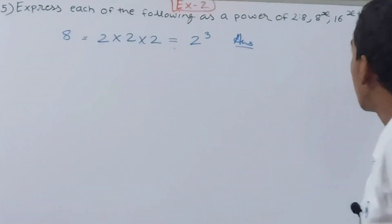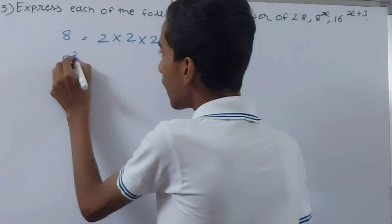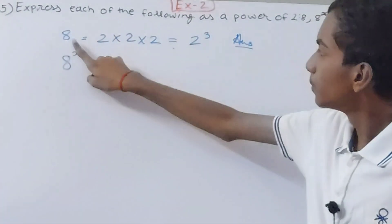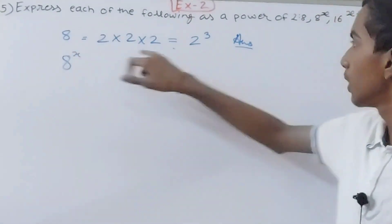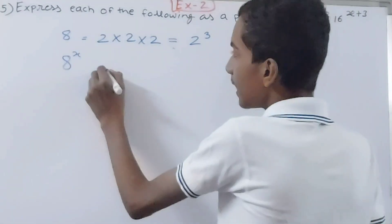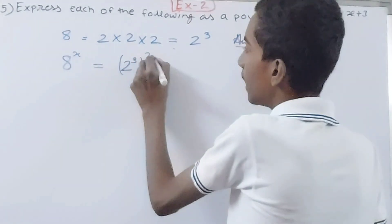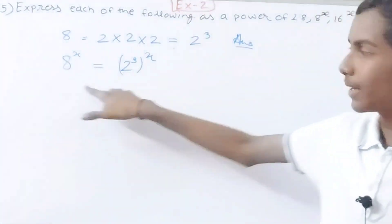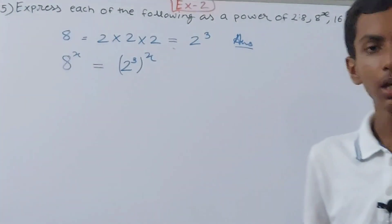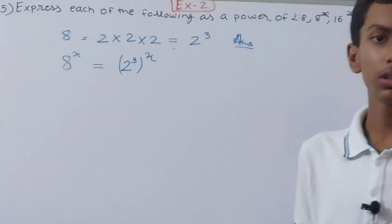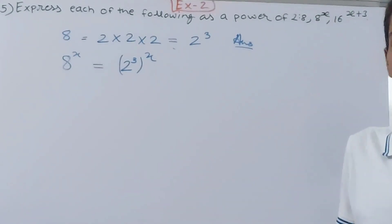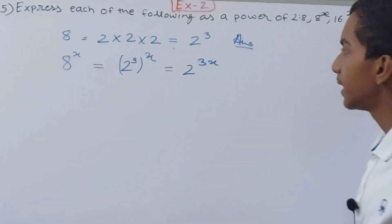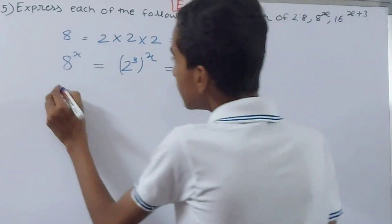Now we have 8 to the power x. Forget about the x for now — we know that 8 is 2³. So I can write 8^x as (2³)^x. The x stays as it is because we are only replacing 8 with 2³. Applying the power rule, this becomes 2 to the power 3x, and that is your answer.